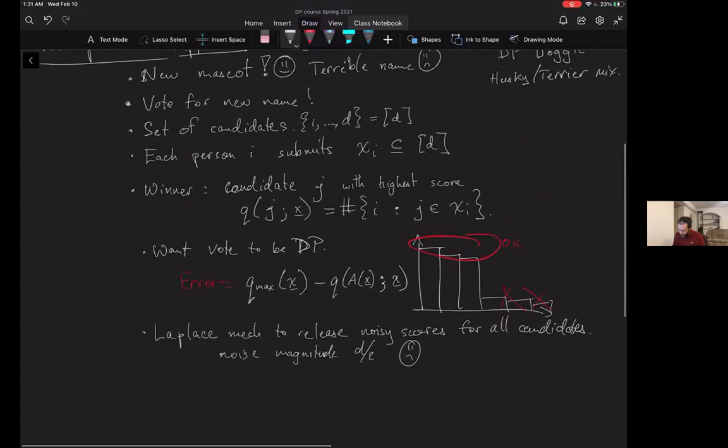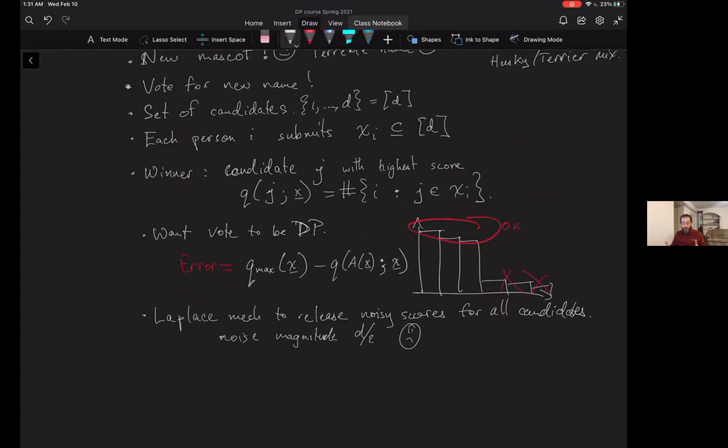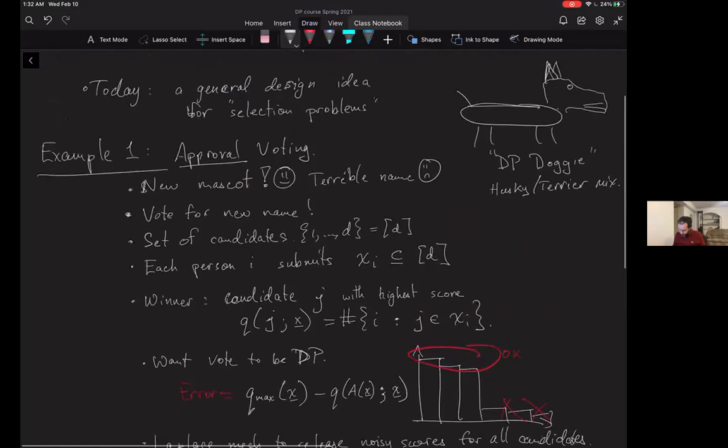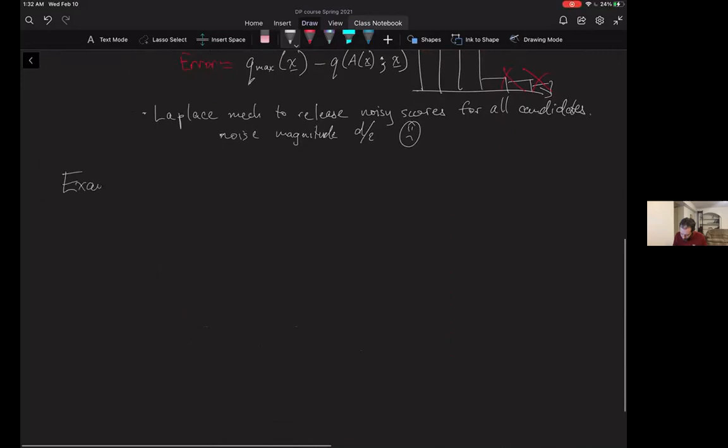D over epsilon is the amount of noise the Laplace mechanism adds and that will potentially lead to us outputting a candidate whose score would be at least D over epsilon worse than the best score. There are situations where that could happen.